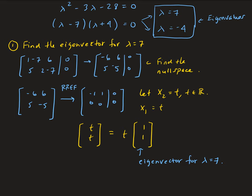This is the basis eigenvector, meaning all eigenvectors for lambda equals seven lie in the span of the vector one, one. We call this the eigenbasis, or sometimes the eigenspan — different books use different terms. So one, one is the eigenvector (the basis for the eigenvector space) corresponding to lambda equals seven.